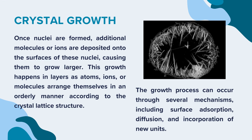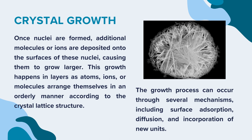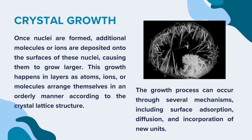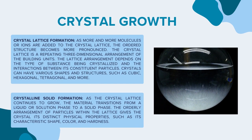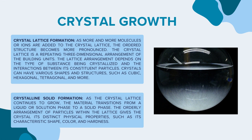The molecules, ions, or atoms arrange themselves neatly like puzzle pieces snapping into place, following a specific pattern called a crystal lattice structure. This growth can occur in different ways — molecules sticking to the surface, moving around, or joining together to form new parts. As the crystal continues to grow, it becomes more organized, with molecules or ions added in a repeating three-dimensional arrangement.